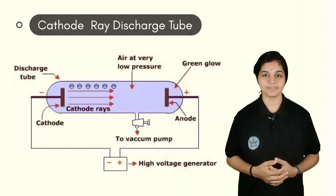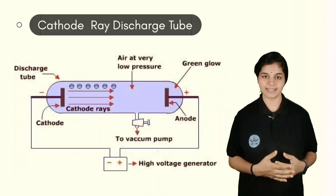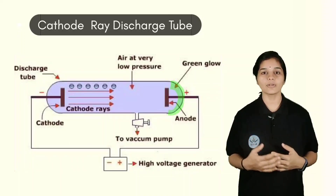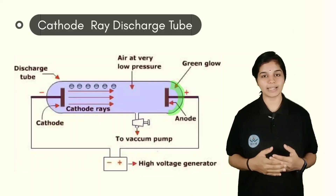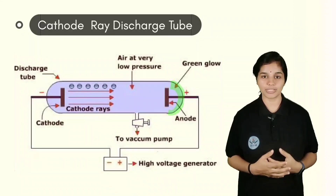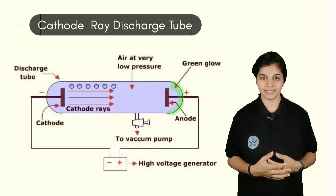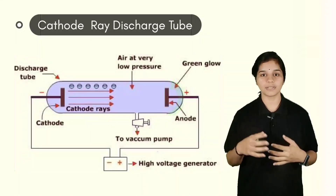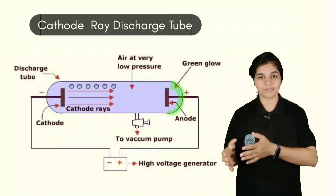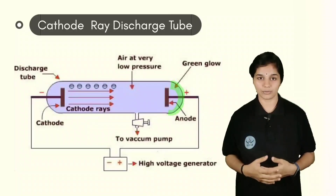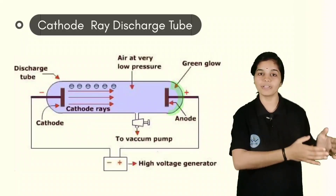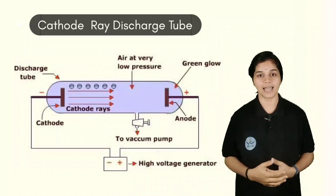These cathode rays were invisible to the naked eye and were identified by coating the glass tube behind the anode with zinc sulfide. This zinc sulfide coating acts as a fluorescent material so that spots will be formed when the cathode rays travel from cathode to the anode. These spots indicate that the particles were moving from cathode to the anode.